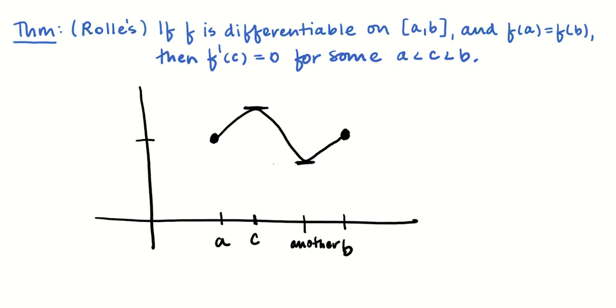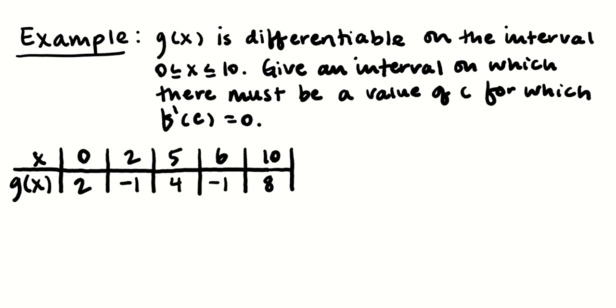So, for example, if we're given a table of values of a differentiable function on a closed interval, then we could probably identify an interval on which there must be a flat tangent by just finding where are there any intervals on which g of x is constant?